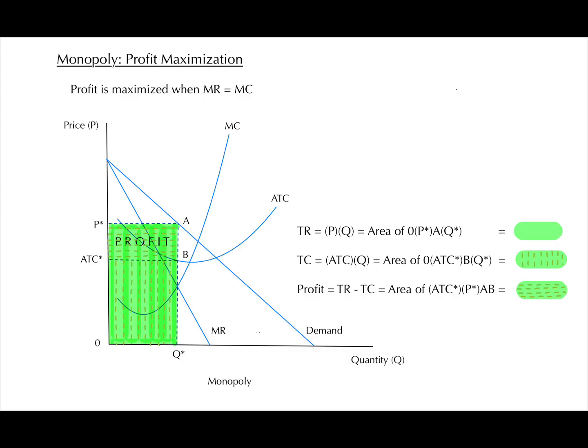Marginal revenue curve intersects the marginal cost curve at a point where we can find Q-star, which is the equilibrium point of the quantity of the product.